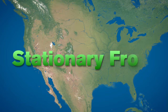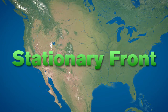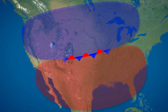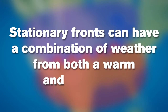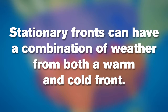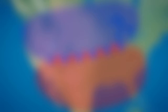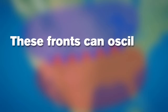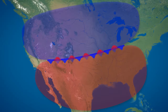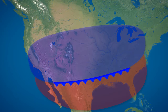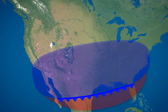A stationary front occurs when two air masses meet, but neither one moves the other out of the way. Stationary fronts can have a combination of weather from both a warm and cold front. These fronts can oscillate, but will generally linger around for several days before one of the air masses pushes the other air mass out of the way.